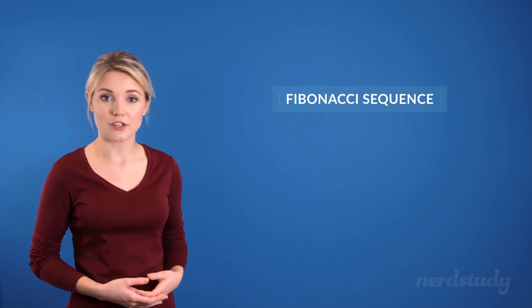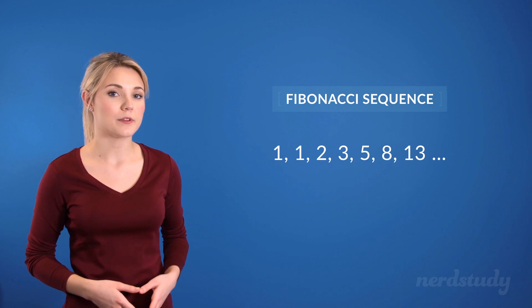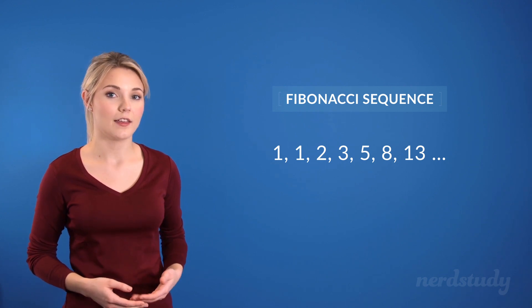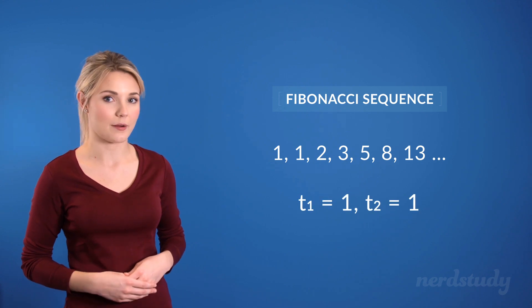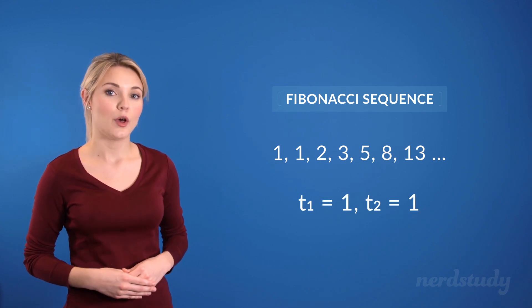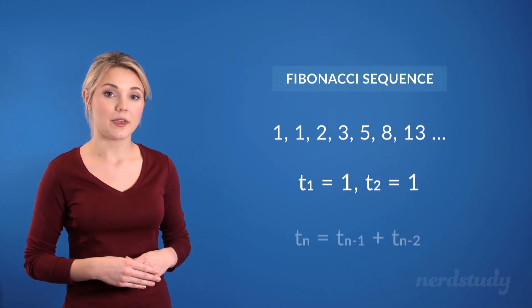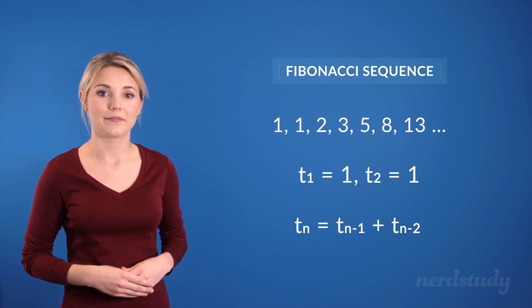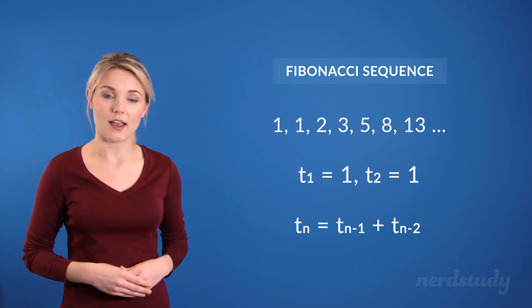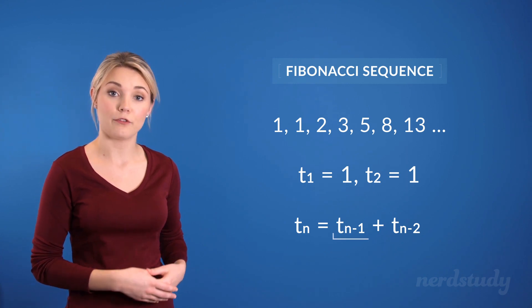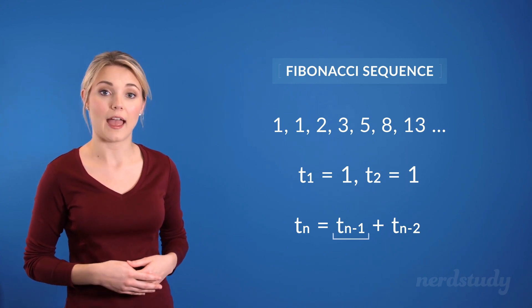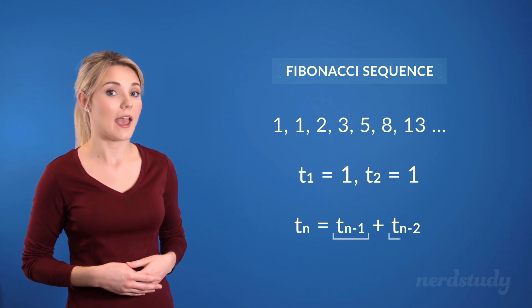So, bringing back the Fibonacci sequence, if we wanted to represent this in a recursive formula, then we would have to write down the representation of the first and second terms. In this example, we're using the letter t, so here is our recursive formula. What we are saying here is that the result of any term is the addition of the term immediately before it and the term that's before n minus 1, which would be n minus 2.